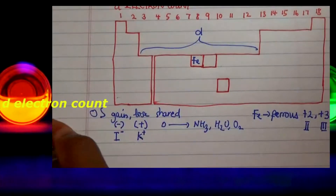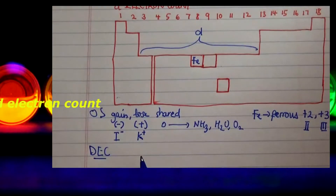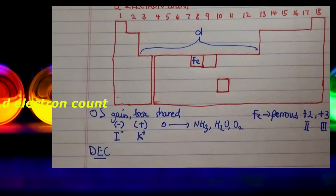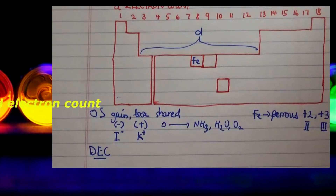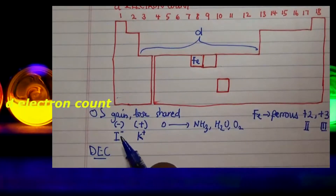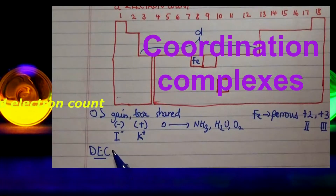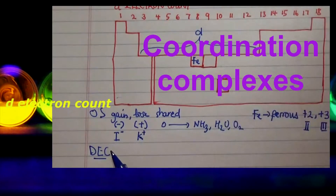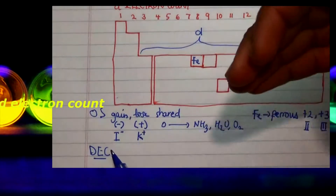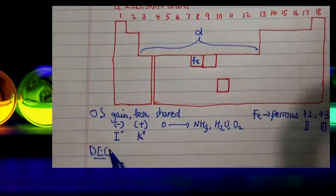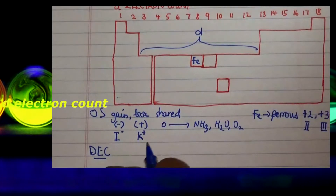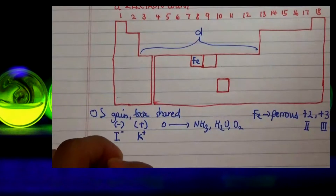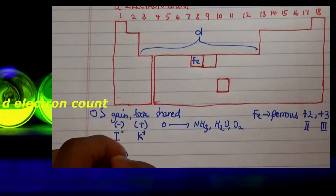Meanwhile, the D electron count is used to describe the electronic configuration of a transition metal's valence electrons in coordination complexes. Take note of that — coordination complexes — which is effective in understanding the shape and the reactivity of the transition metal complex. Let's take for an example a D10 species — we'll talk about this 'D' notation later on in the video.